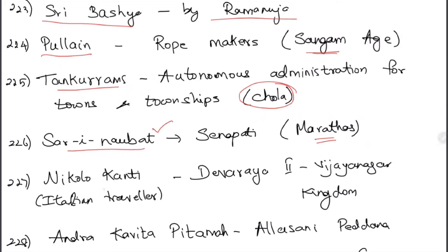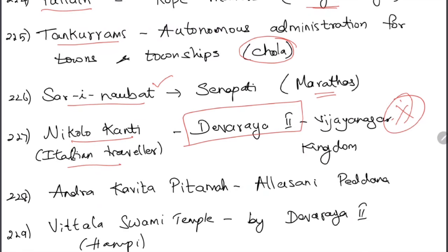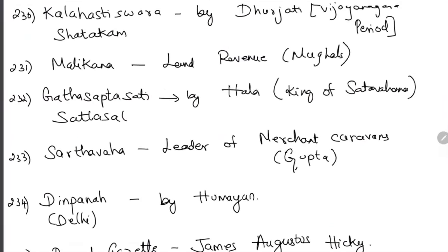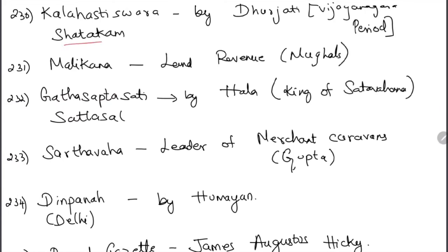Ser-i-Naubat were Senapathis (military commanders) during the Maratha period — though it looks like a Sultanate word, the Marathas borrowed many administrative terms from the Sultanate. Nicolo Conti was an Italian traveler who visited India during the Vijayanagara period under Devaraya II's rule. Allasani Pedana is called Andhra Kavita Pitamaha. Vitthala Swami Temple in Hampi was built by Devaraya II. Kalahastisvara Shatakam was written by Dhurjati during the Vijayanagara period.